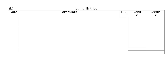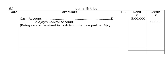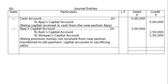We have to draw the proper journal format. There is no date. First entry: Cash Account debited to Ajay's Capital Account Rs. 5 lakhs — being capital received in cash from the new partner Ajay. Second entry: Ajay's Capital Account debited Rs. 3 lakhs for premium for goodwill which he could not pay — to Ashin's Capital Account Rs. 1.5 lakhs and to Shreyas's Capital Account Rs. 1.5 lakhs — being premium not received from the new partner, transferred to old partners' capital accounts in sacrificing ratio. The total of the debit and credit side will be Rs. 8 lakhs each.